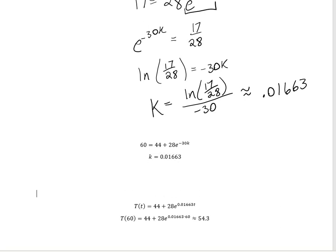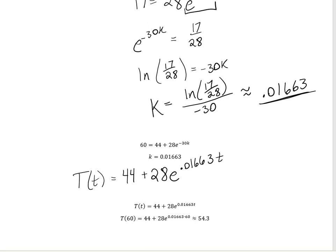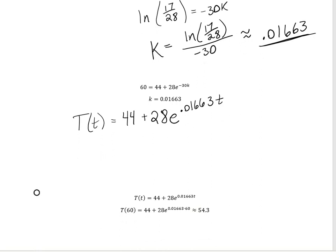Now that we have k, our full temperature function is T(t) = 44 + 28·e^(−0.01663·t). The question asked for the temperature 30 more minutes after the 30-minute mark, so we plug in t = 60. After 60 minutes the temperature of the object is going to be 54.3°F — and by the way, we're dealing in Fahrenheit.